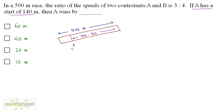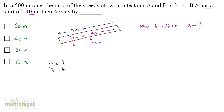Let us calculate the distance traveled by B when A travels 360 meters. The ratio of speeds of A and B is 3 to 4, so S1 divided by S2 equals 3 divided by 4. Since distance is directly proportional to speed, the ratio of distances is also 3 to 4. So when A travels 3 meters, B travels 4 meters.